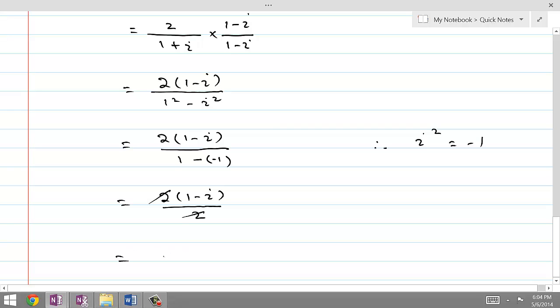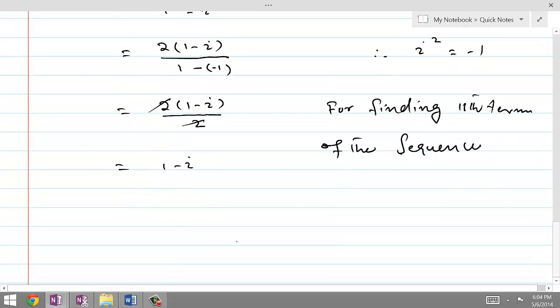For finding 11th term of the sequence, A11 is equal to A times R to the n minus 1.